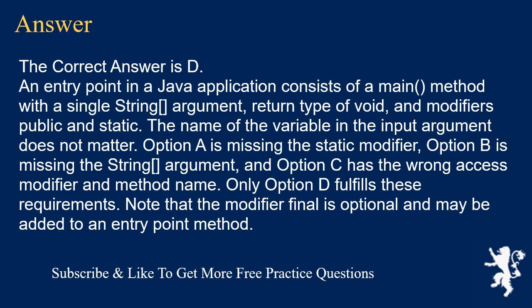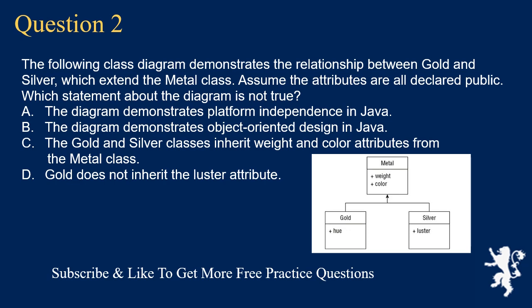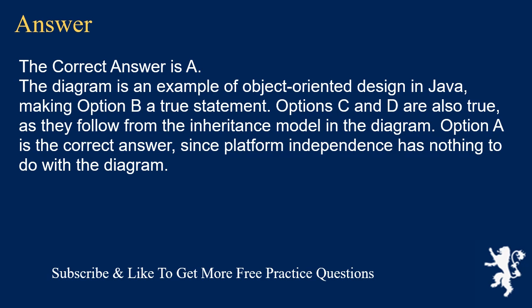Note that the modifier final is optional and may be added to an entry point method. Question 2: The following class diagram demonstrates the relationship between Gold and Silver, which extend the Metal class. Assume the attributes are all declared public. Which statement about the diagram is not true? A) The diagram demonstrates platform independence in Java. B) The diagram demonstrates object-oriented design in Java. C) Gold and Silver classes inherit weight and color attributes from Metal. D) Gold does not inherit the luster attribute. The correct answer is A. The diagram is an example of object-oriented design, making B true. Options C and D also follow from the inheritance model. Option A is correct as the answer since platform independence has nothing to do with the diagram.